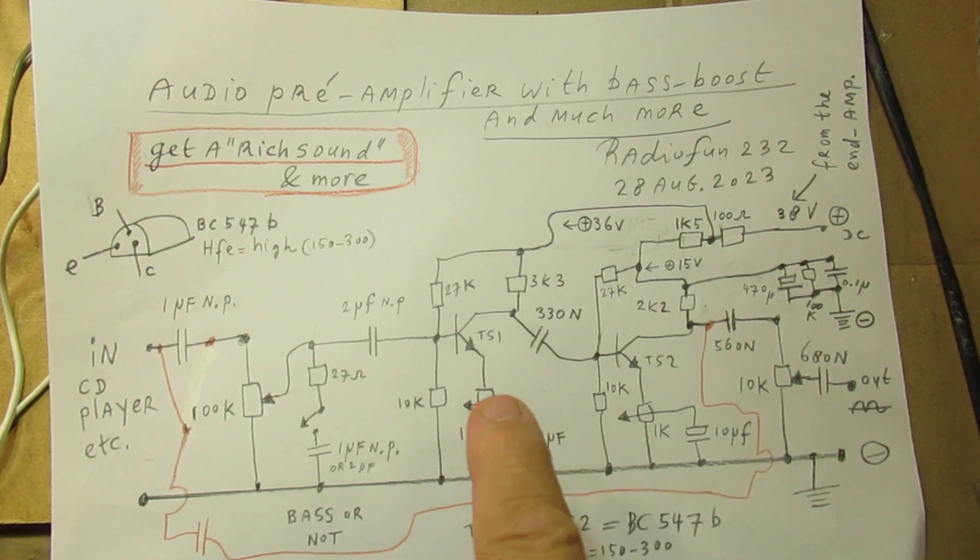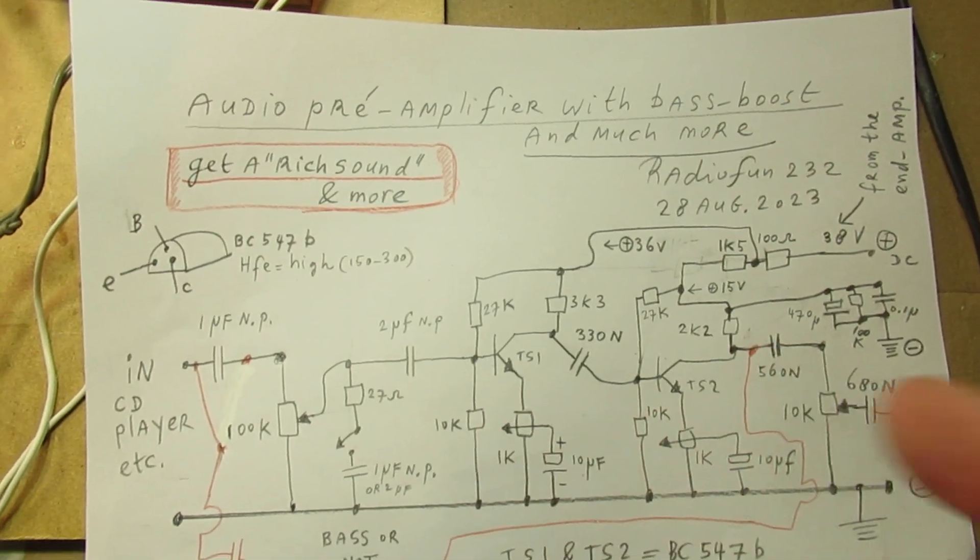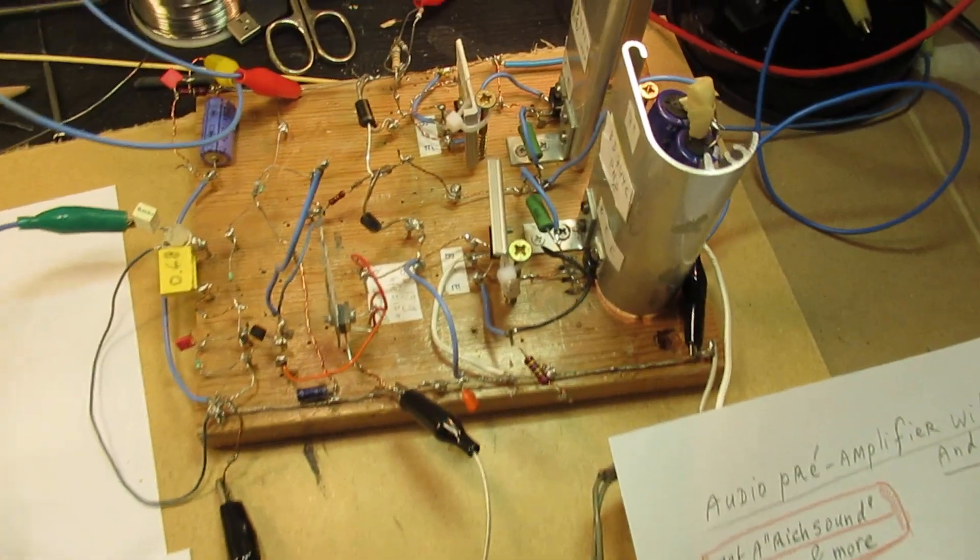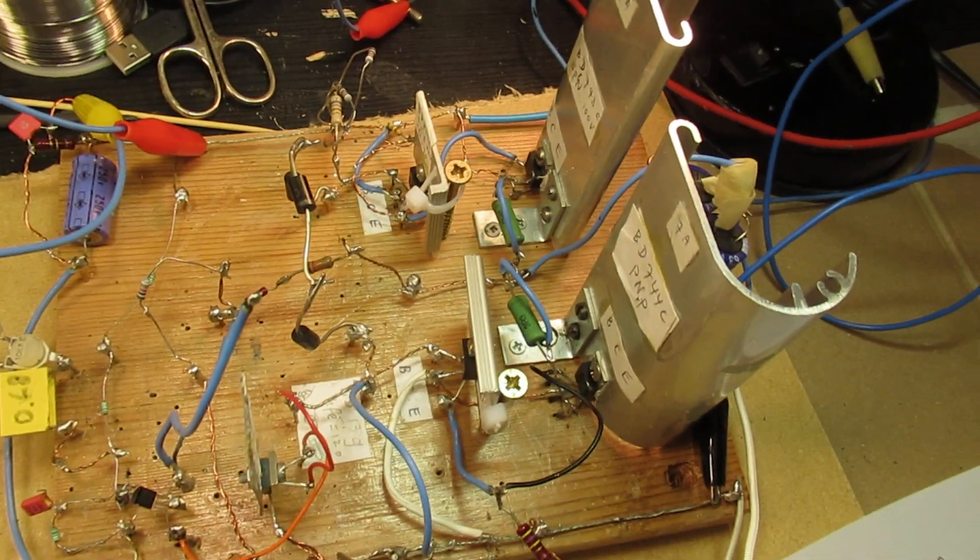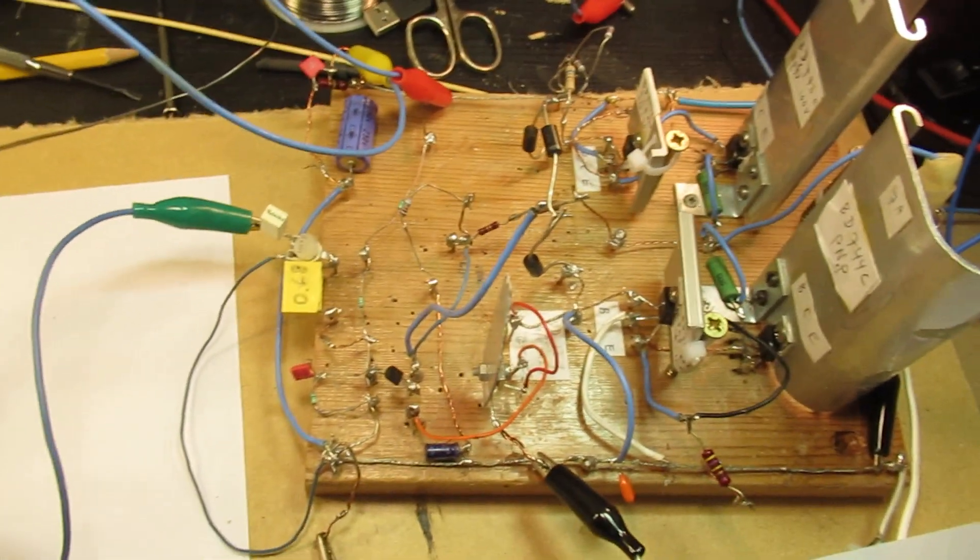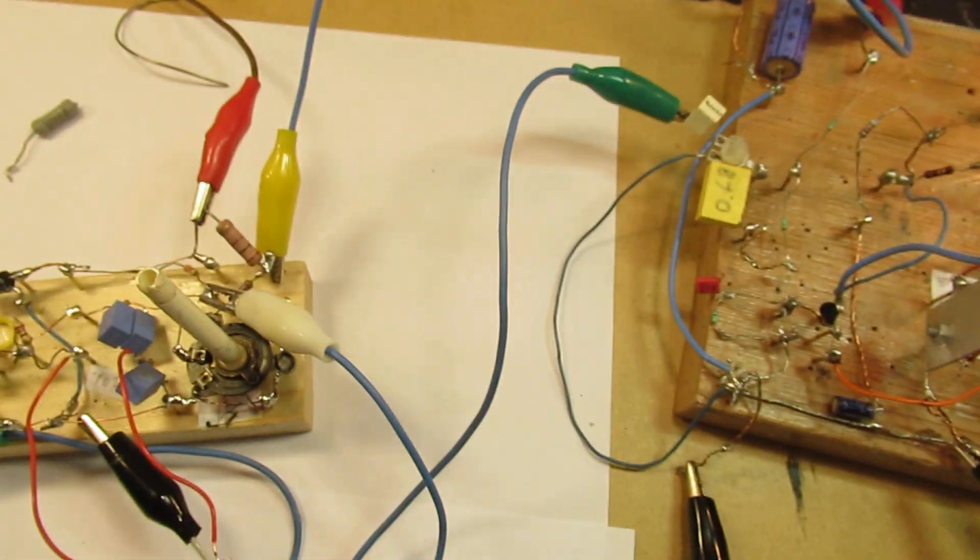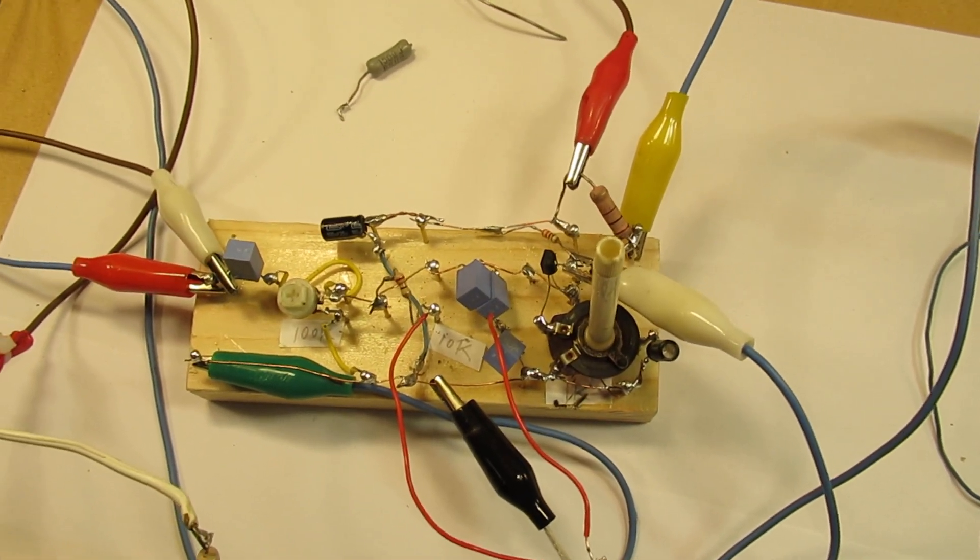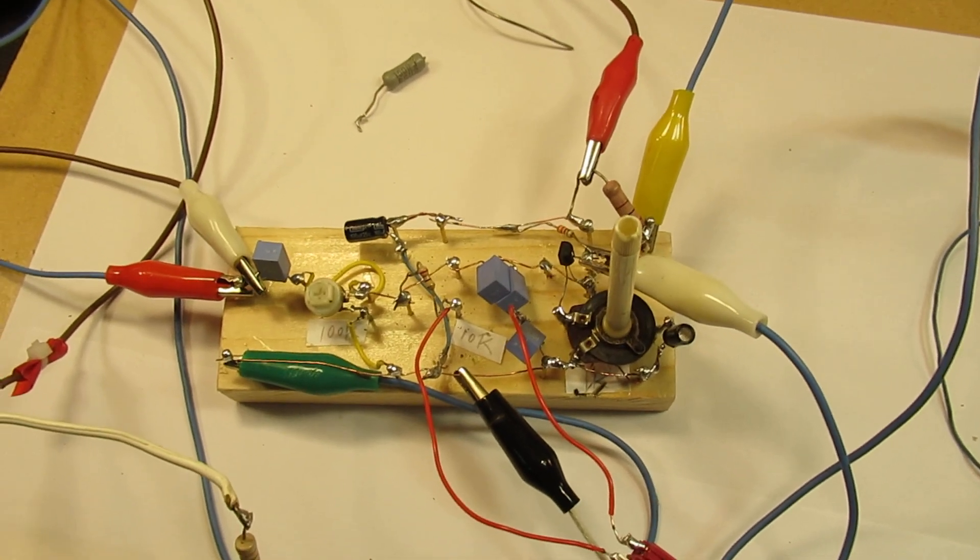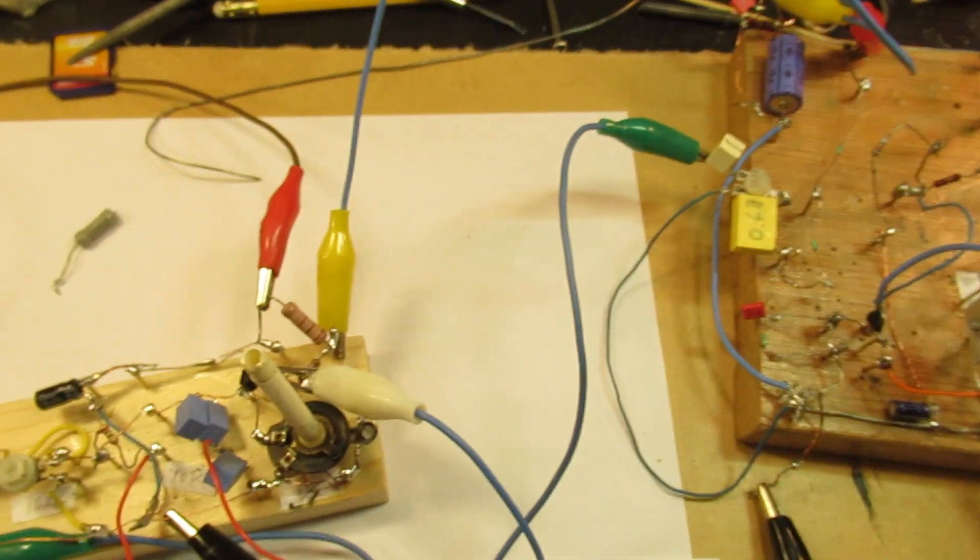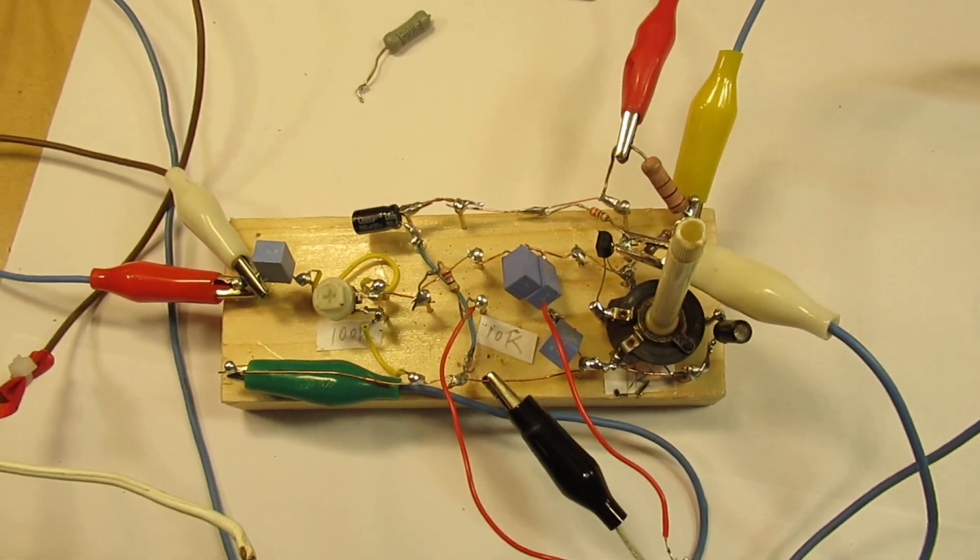Pre-amplifier made with two BC547B transistors and here is the end amplifier. I was talking about that end amplifier a few days ago. Perhaps it's interesting to show how you can get a kind of rich mellow sound out of such an amplifier. And of course that doesn't regard only to this amplifier but also to other amplifiers and that's a reason why I want to publish it.